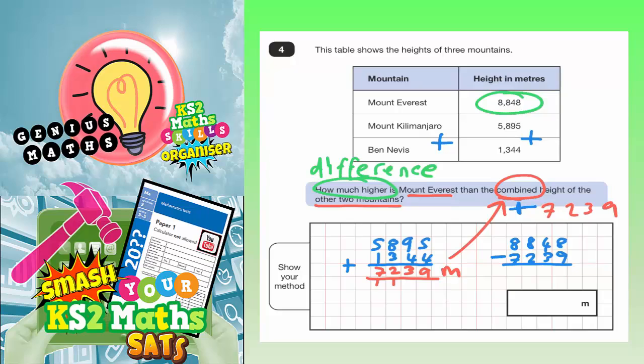But once we've worked this answer out, that will be the difference. So 8 subtract 9, we can't do, so we borrow from the next column.